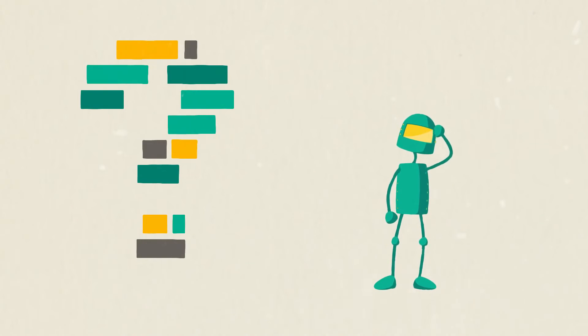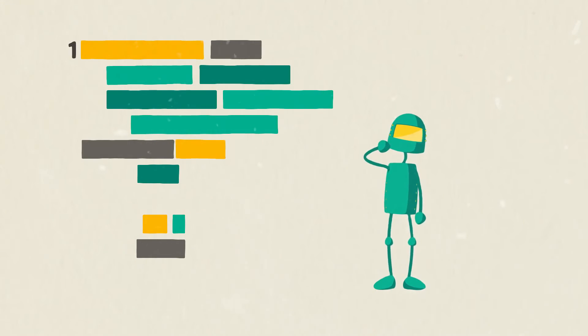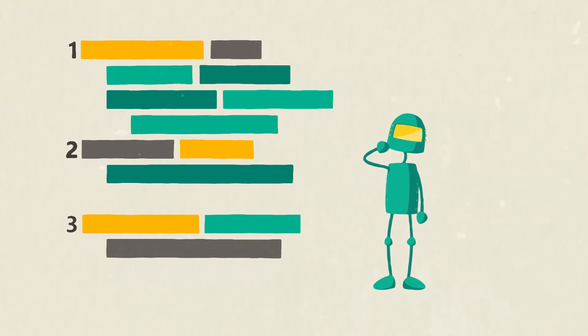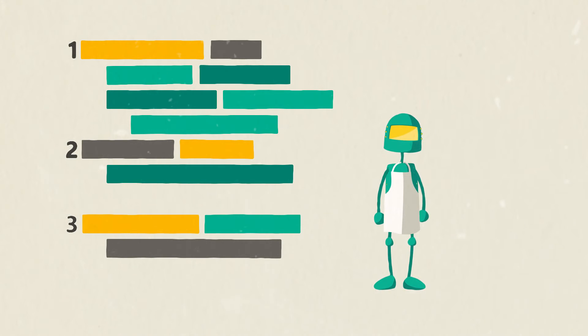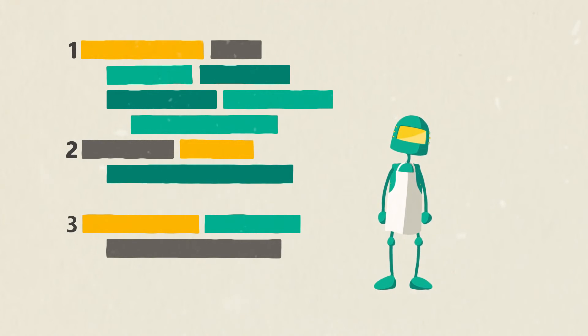So, what is code exactly? Code is a precise set of instructions a computer can understand. Think of it as a recipe. The instructions need to be precise, so whatever you're making turns out the way it should.